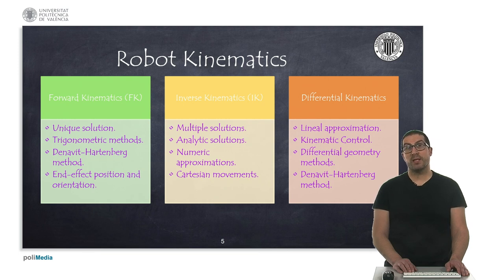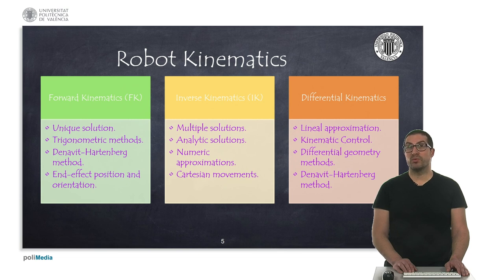Differential kinematics, on the other hand, produces a linear transformation of the robot kinematics, and therefore it is usually used in kinematic robot control. The robot Jacobian can be obtained from the differential geometry methods or also from the results obtained by applying the Denavit-Hartenberg method, as we will see.